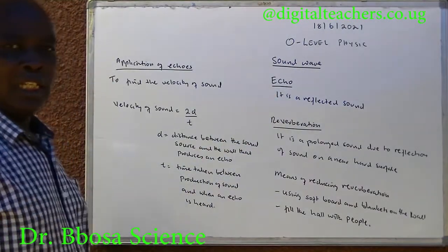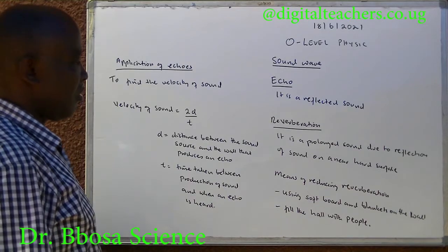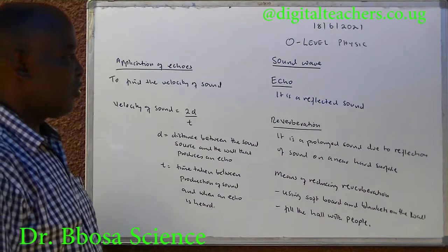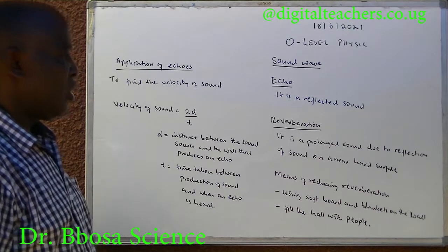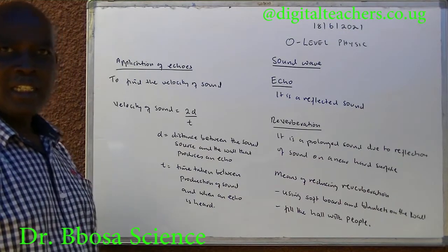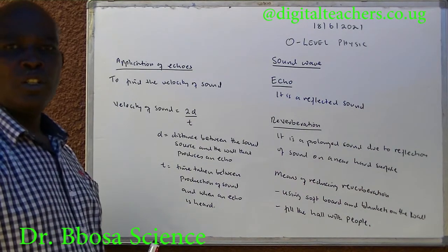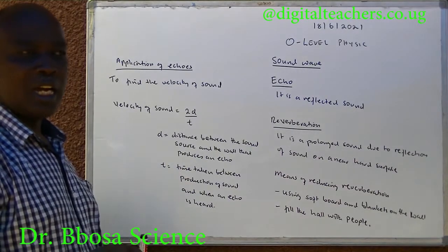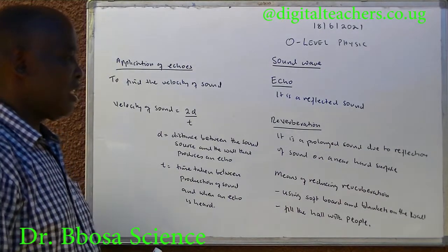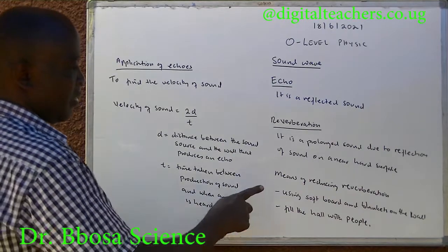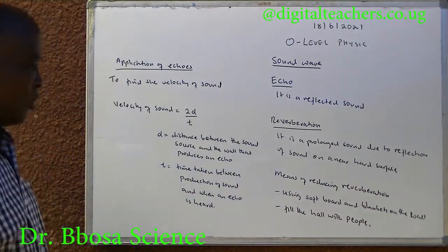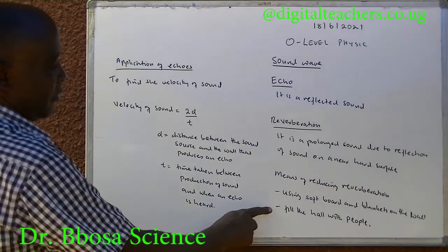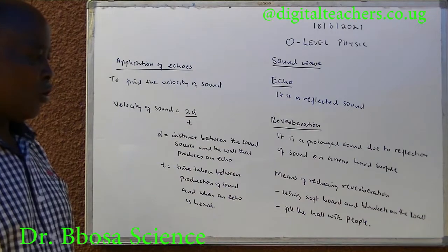Echo: it is a reflected sound. Reverberation: it is a prolonged sound due to reflection of sound off a nearby hard surface. The echo joins the original sound making it seem prolonged. Methods of reducing reverberation include using soft boards and blankets on the walls, and filling the space with people.